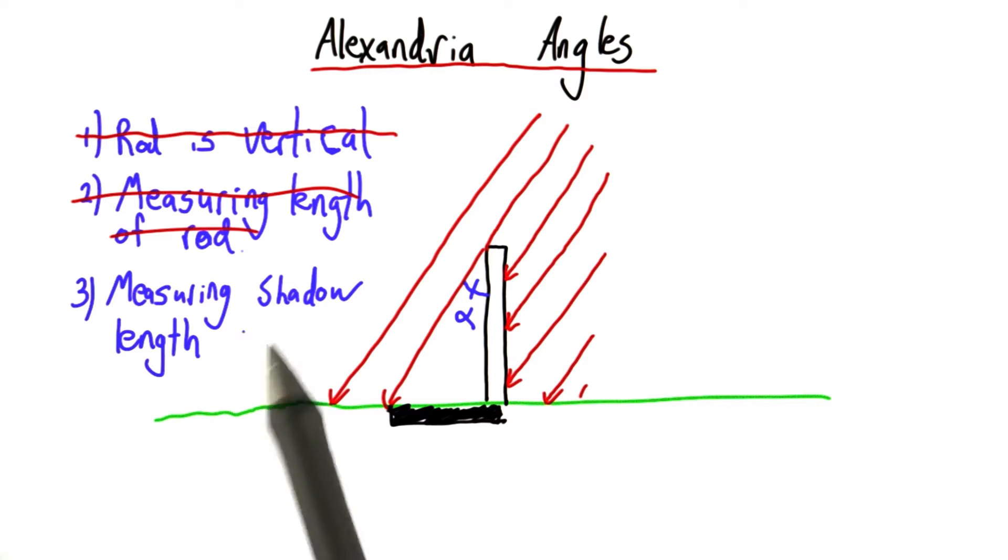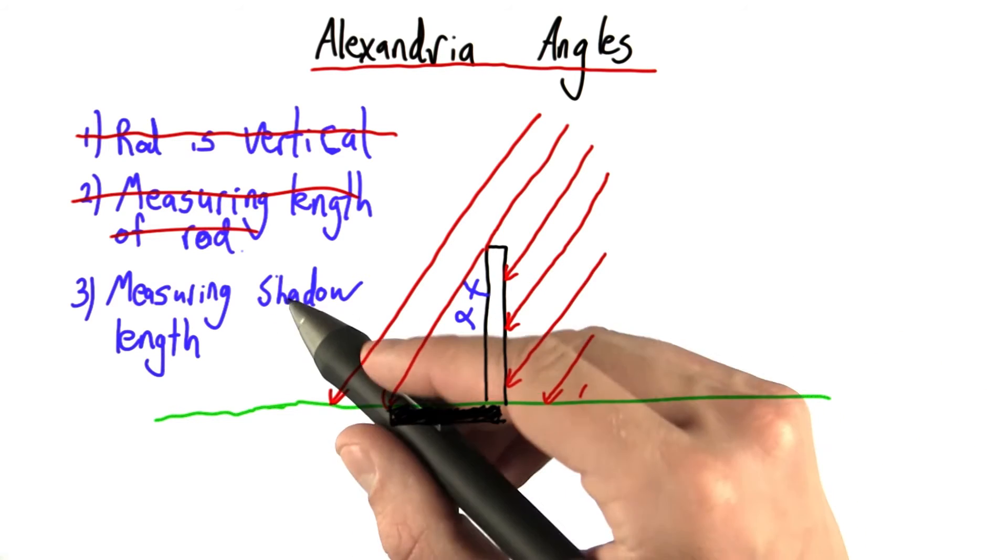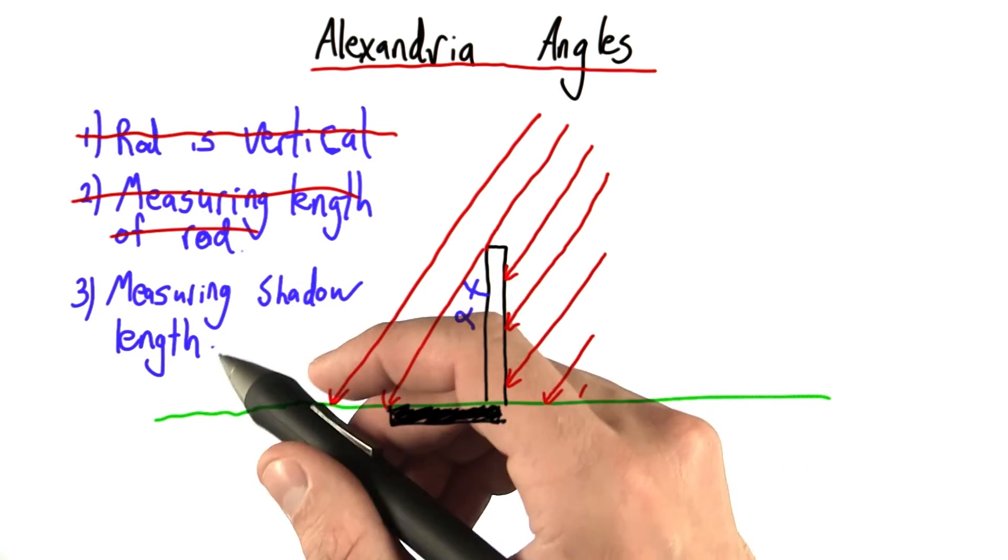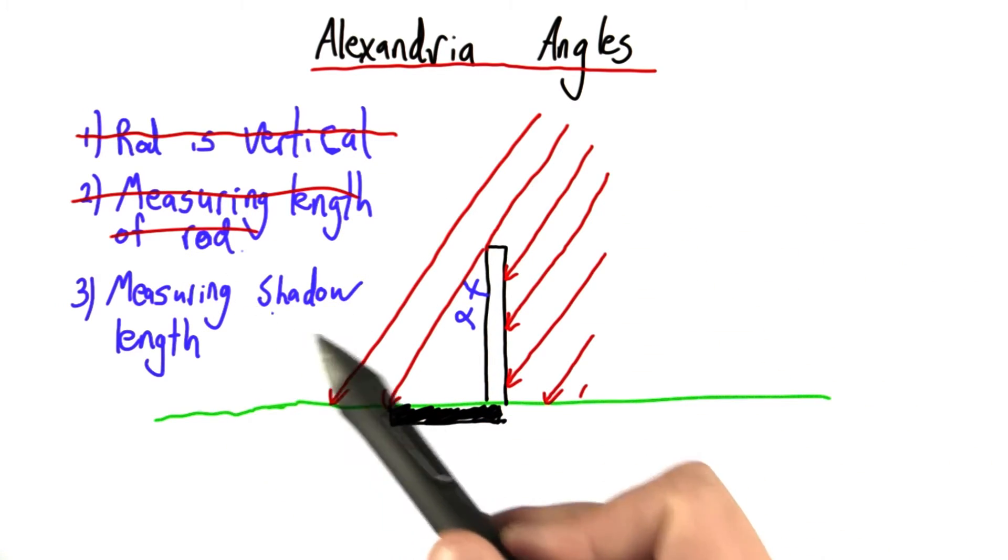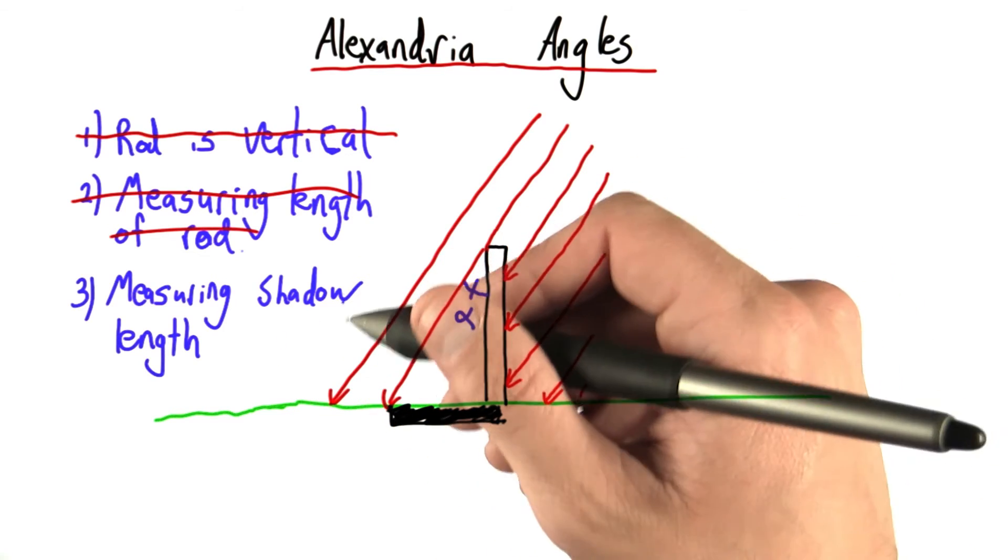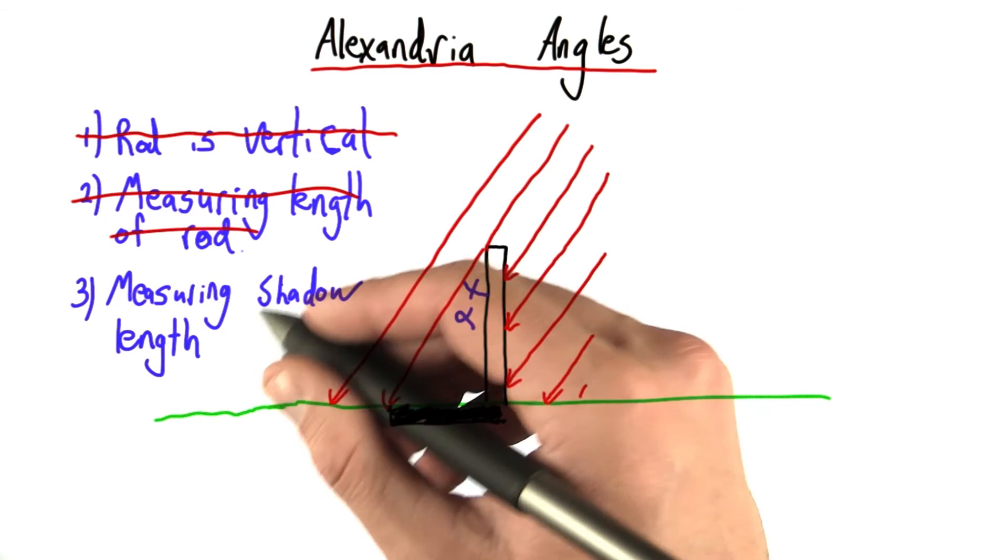Finally, we have measuring the length of the shadow. Now, when you try to do this experiment at home, and that will be one of the homework assignments, we're all going to collect this data together. You'll find that measuring a shadow length isn't completely trivial. In fact, shadows are a little fuzzy. It's hard to tell where they begin and where they end. Actually, there is some error here.